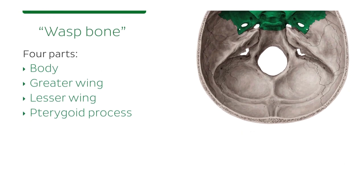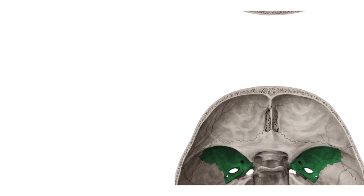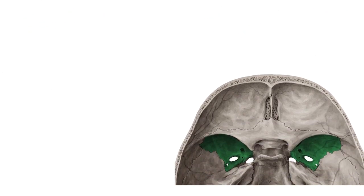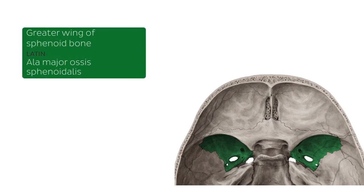Now we're going to focus on what you see highlighted in green here — these are the greater wings of the sphenoid bone. The greater wings arise posterolaterally from the body of the sphenoid. There are three important openings or foramina visible on the greater wings from this aspect.